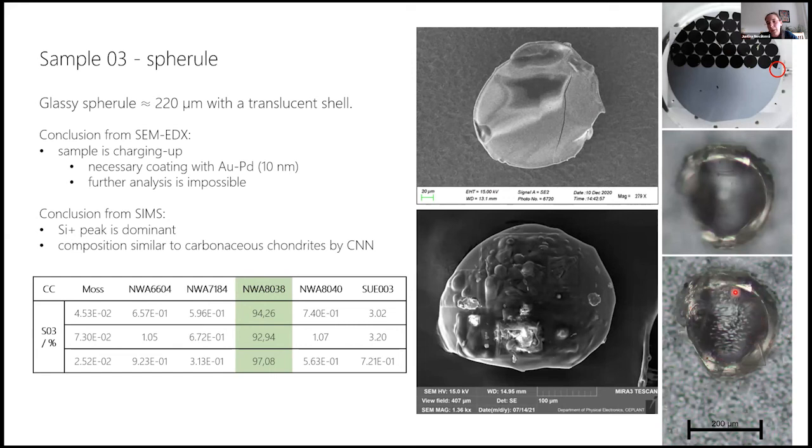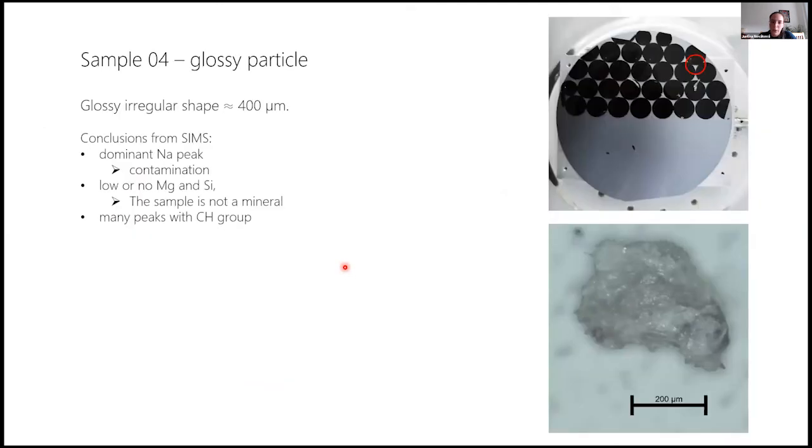The third sample, again a spherule with a shell, a very translucent shell and a dark middle and with a crack. This sample was very hard to examine because it was charging up with the electrons under the SEM-EDX. And when we tried to avoid that by coating it with Au/Pd, it showed these blobs, so the EDX analysis was completely impossible.